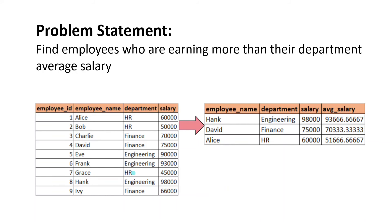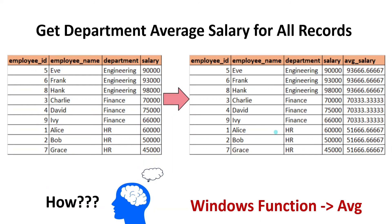In this way, I have to find out for all the employees even though they are part of different departments. Coming to the engineering department, only Hank is earning more than the average salary of their department engineering. Coming to finance, only David is earning more than the department average salary for finance. I hope you understood the problem statement.